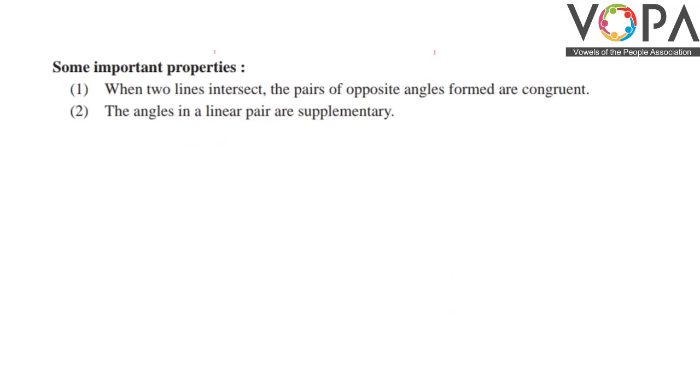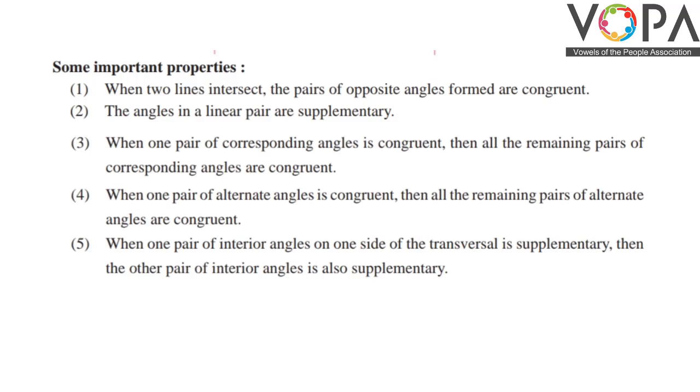Some important properties. First, when two lines intersect, the pairs of opposite angles formed are congruent. Second, the angles in a linear pair are supplementary. Third, when one pair of corresponding angles is congruent, then all the remaining pairs of corresponding angles are congruent.